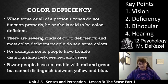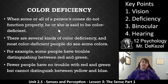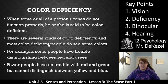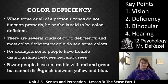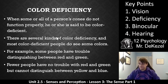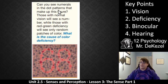Sometimes people have a color deficiency, or they are colorblind in some way. When some or all of a person's cones do not function properly, he or she is said to be color deficient. There are several kinds of color deficiency, and most color deficient people still see some colors — it is very rarely a complete absence of color. For example, people will have trouble distinguishing between red and green. A few people have no trouble with red and green but cannot distinguish between yellow and blue. So there are different types of color deficiency, and rarely are you completely color deficient.